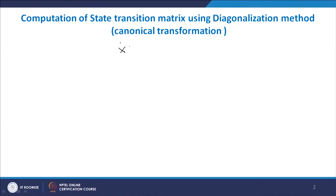Earlier we have seen how to determine the state transition matrix using the power series method and also by the Laplace transform approach. Now we will see how to determine the state transition matrix using the diagonalization method. We start with the same state equation, x-dot = Ax, x(0) = x₀, and x(t) = e^(At)·x₀. Our purpose is to determine e^(At) by means of diagonalization.